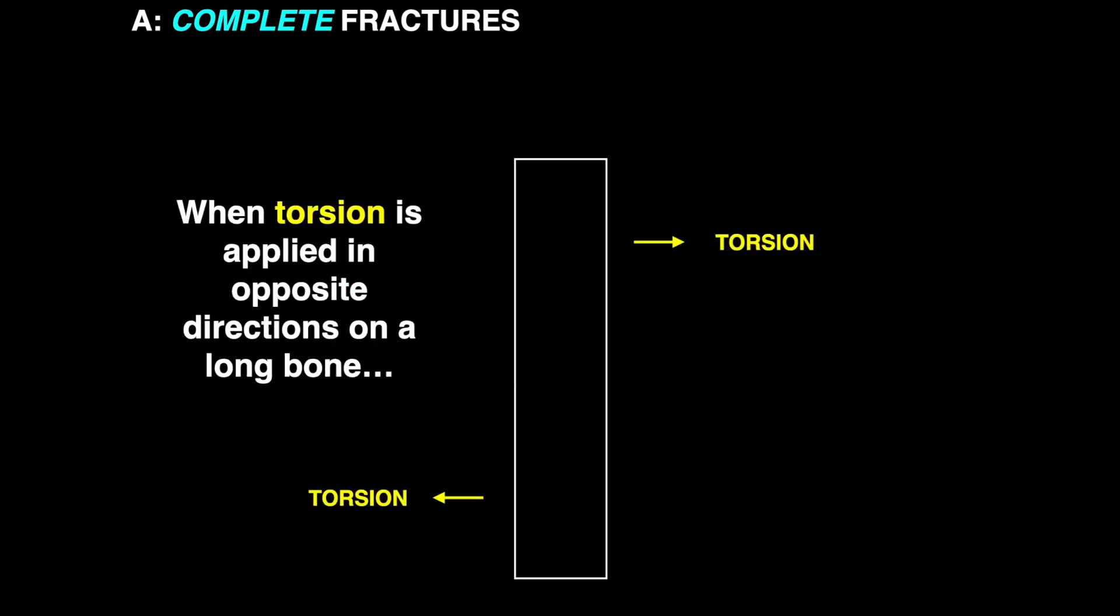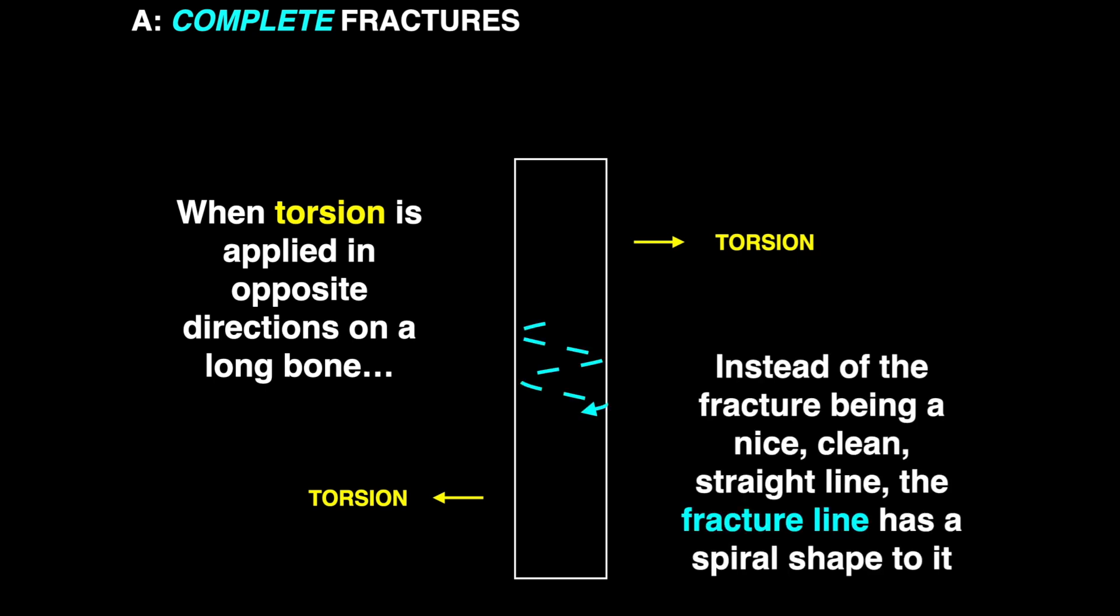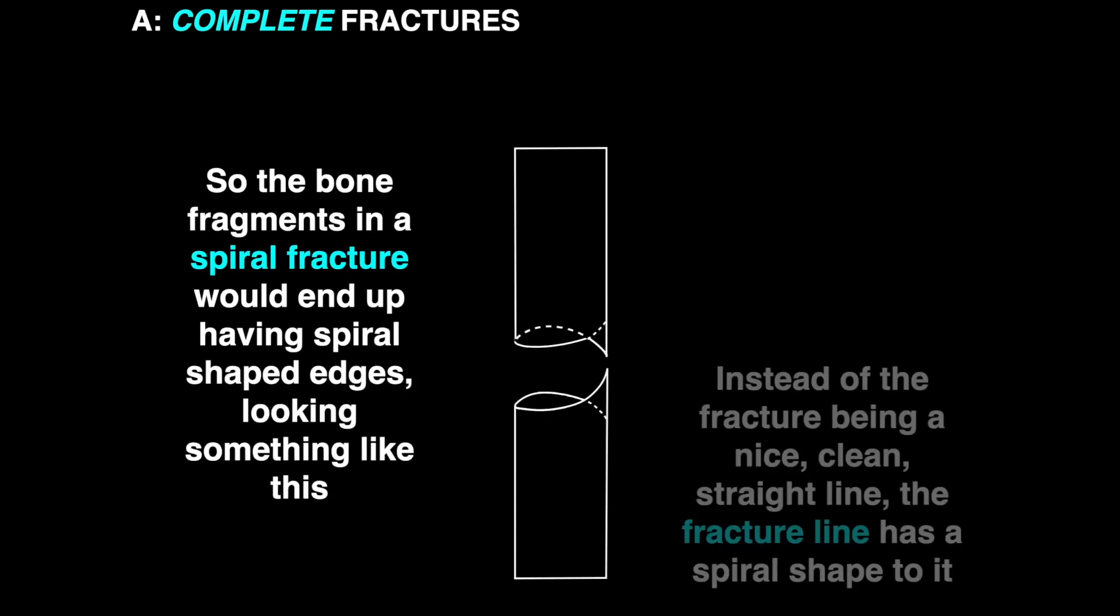So this scenario is a little bit different. Still pretend that this is the humerus, but now imagine that there's torsion being applied on the bone. At the shoulder end, it's being applied one way. At the elbow end, it's being applied the other way. So this causes a fracture line, but instead of it being a nice, clean, straight line, the fracture line has a spiral shape to it. So the bone fragments in a spiral fracture end up having spiral-shaped edges looking something like this.